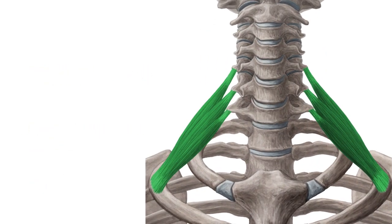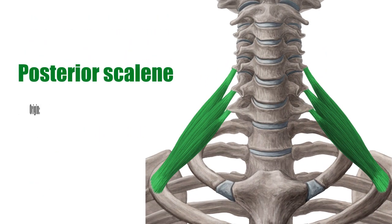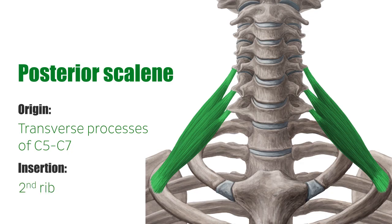The posterior scalene muscle has its origin at the posterior tubercles of the transverse processes of C5 to C7, i.e. the fifth to seventh cervical vertebrae, and its insertion at the upper margin of the second rib.